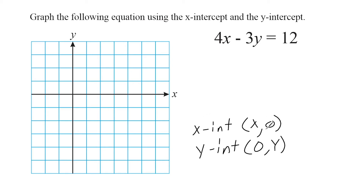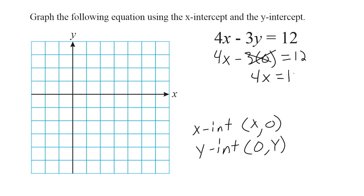Let's start by figuring out what our x-intercept is. All we're going to do is plug zero in for the y value of our equation. So we rewrite this as 4x minus 3 times zero equals 12. Well, 3 times zero is zero, so this term completely disappears, leaving us with 4x equals 12. At this point, this should just be mental math — 4 times 3 is 12, so x equals 3. Which means our x-intercept is located at the point three, zero.